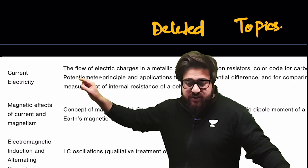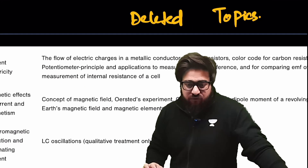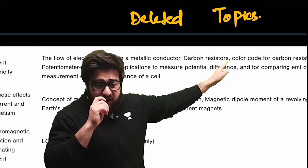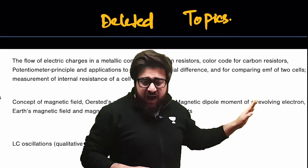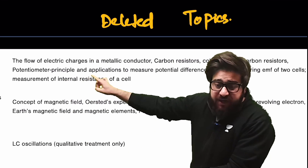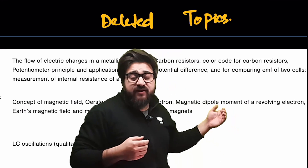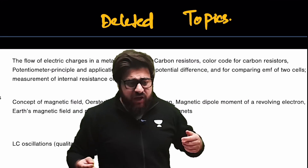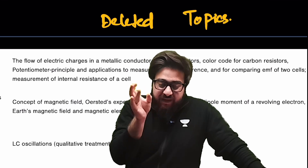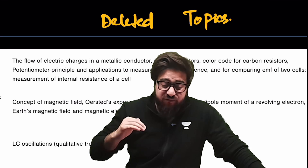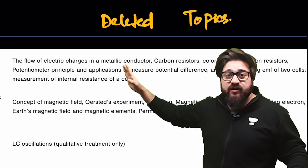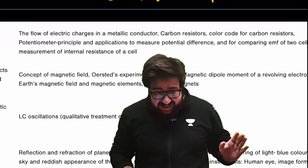Let's suppose if we talk about current electricity — like you have the flow of charges in a metallic conductor — the important deleted topic in this case is the carbon resistor, and also the color code of carbon resistors. And the potentiometer and its applications — like to find the internal resistance of a cell, to compare the EMF of two cells — all of this has been deleted. If you have watched our marathons, like the current electricity separate marathon or the complete physics marathon I recently took, I didn't teach any of these topics because we know these are deleted.